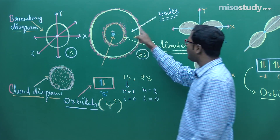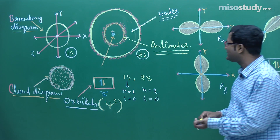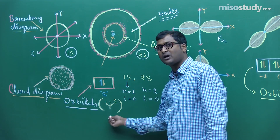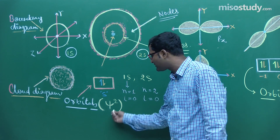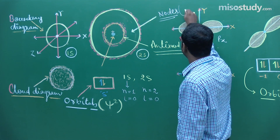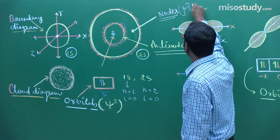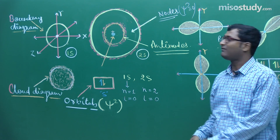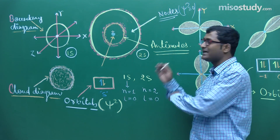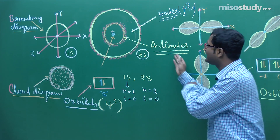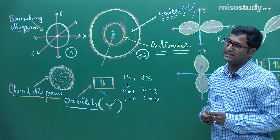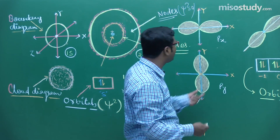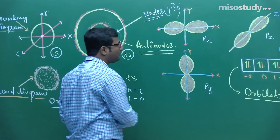In terms of orbital notation, at a node the electron density is zero. In terms of the wave function, at a node the value of ψ² is equal to zero, while at an antinode the value of ψ² is maximum — meaning the probability of finding an electron is maximum.